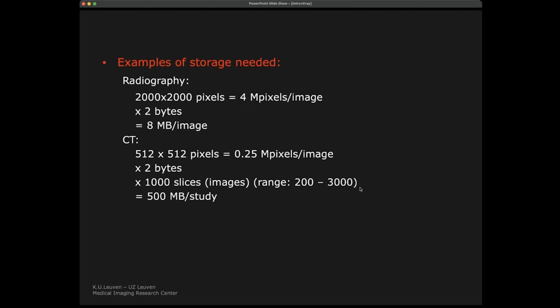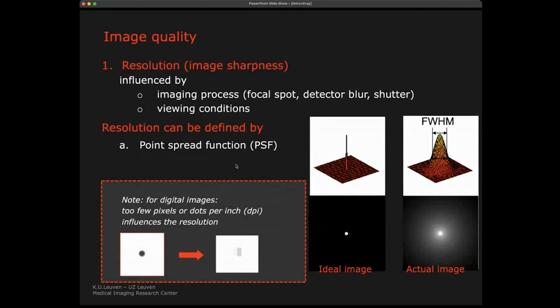So you have to think about which images you acquire, whether they're relevant, and how many you acquire. For example, when looking at the heart with ultrasound, you take many different types of sequences — but do you take one heartbeat, three heartbeats, or dynamic studies? You always have to balance the clinical information need with the technology and logistics.